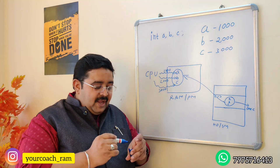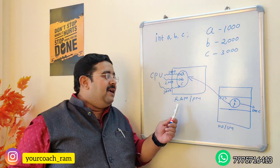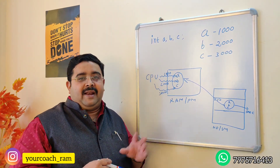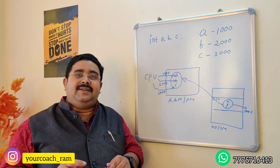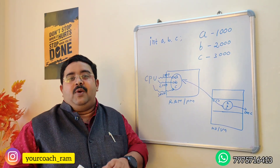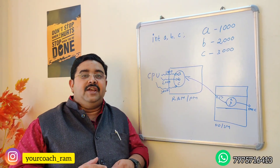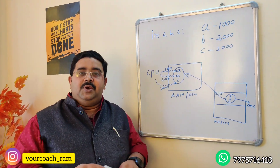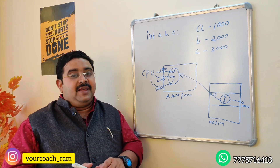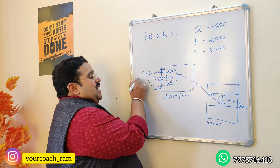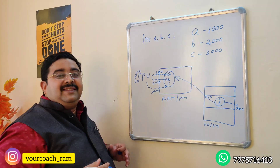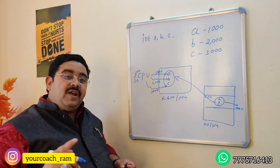Here's a simple analogy: I am like the CPU, and the staff room is like RAM. If I come to class without a marker and duster, I have to keep going back to the staff room — walk to get marker, walk to get duster — and in a one-hour class I can only teach for half the time. The solution: hold the marker in one hand and the duster in the other. Just as God gave hands to me, God gave hands to the CPU too — the hands of the CPU are called registers, embedded within the CPU.